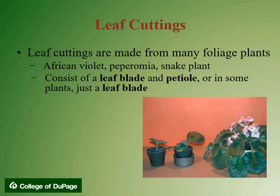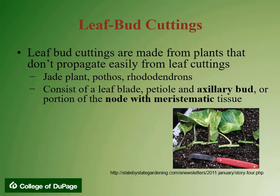Another type of softwood cutting is a leaf cutting, made from many foliage plants such as the African violet, peperomia, and snake plant. A leaf cutting consists of a leaf blade and petiole, or in some plants just a leaf blade. A second type is the leaf bud cutting, made from plants that do not propagate easily from just leaf cuttings — examples include the jade plant, pothos, and rhododendrons. Leaf bud cuttings consist of a leaf blade, a petiole, and an axillary or portion of the node with meristematic tissue present.